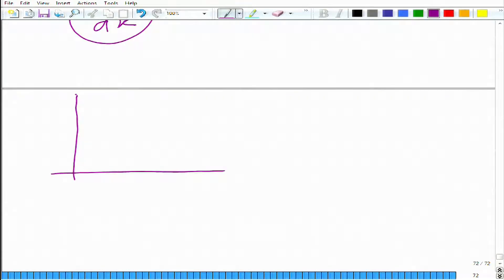Here we are drawing an isoquant. On the y-axis we have K, and on the x-axis we have L, and here we have one isoquant.